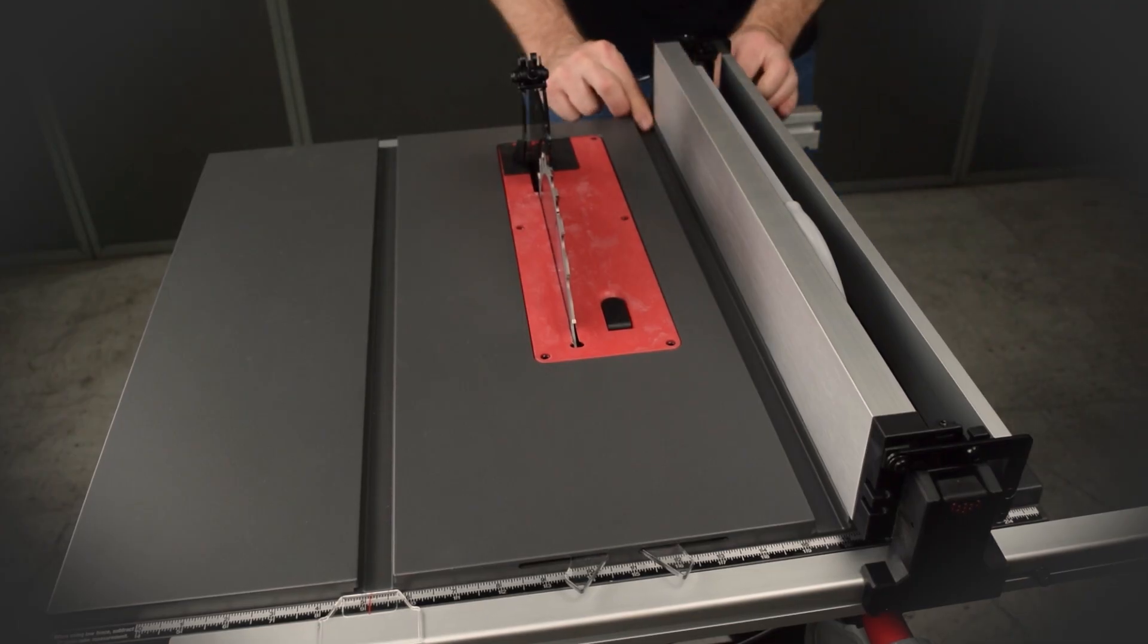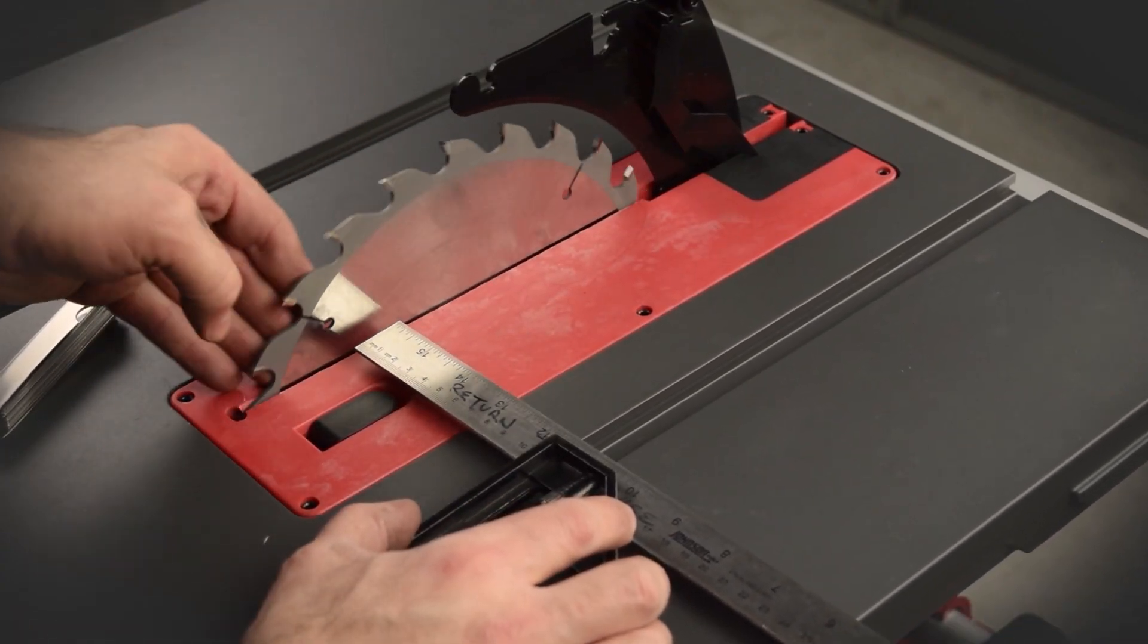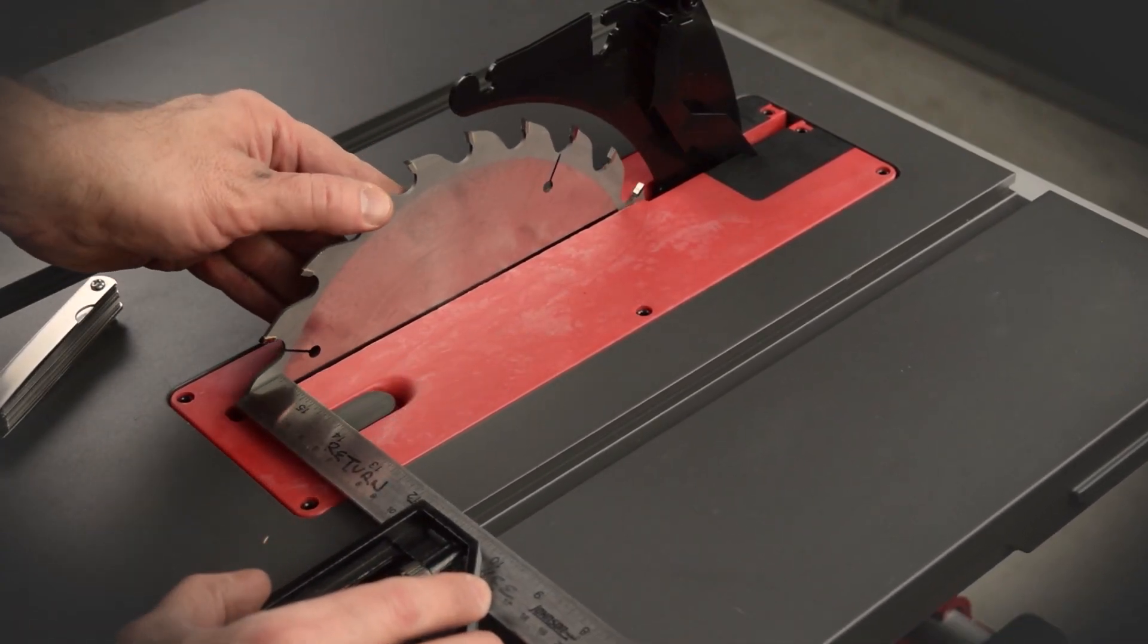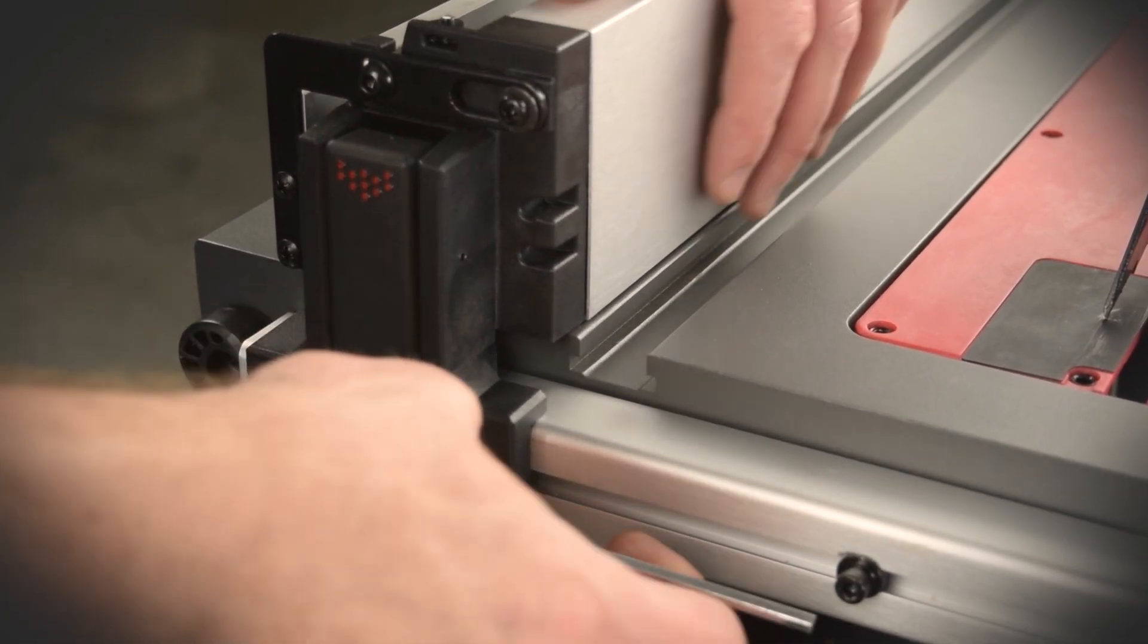Before continuing with this procedure, first make sure the rip fence and the blade are aligned. See the blade and fence align video or the instruction manual for your compact table saw. You can access both at SawStop.com.